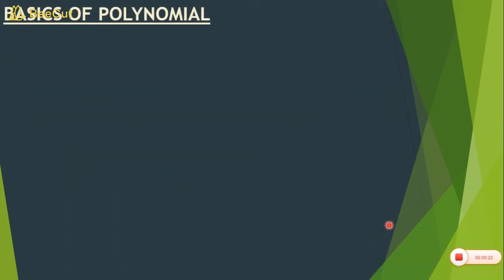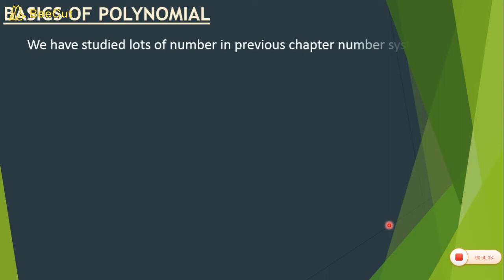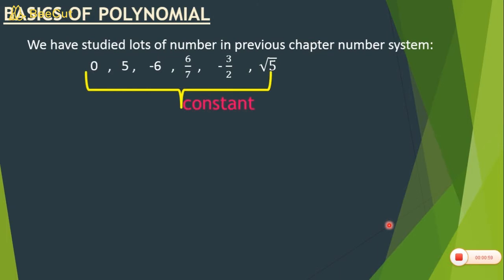Basics of polynomial. In the last chapter — number system — you all studied about different types of numbers: 0, 5, minus 6, 6 by 7, minus 3 by 2, and root 5. Among these you have integers, whole numbers, rational, and irrational numbers. Every category of number has one thing in common — they are all constants.